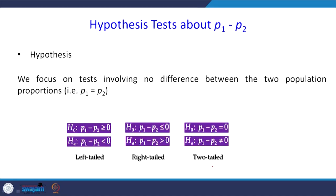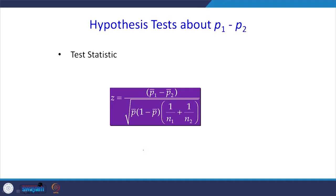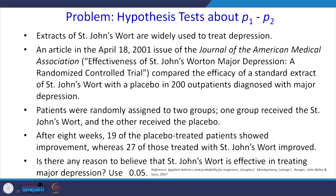There can be left-tail, right-tail, or two-tail tests for two-sample population proportions. The standard error is the square root of p*(1-p)*(1/n1 + 1/n2). When p1 equals p2 equals p, we use the pooled estimate: p bar equals (n1*p1 bar + n2*p2 bar) divided by (n1 + n2). The test statistic is: z equals (p1 bar minus p2 bar) divided by the square root of (p bar*(1-p bar)*(1/n1 + 1/n2)).